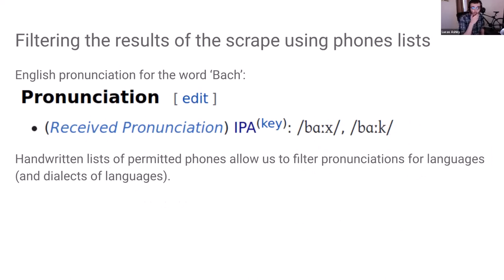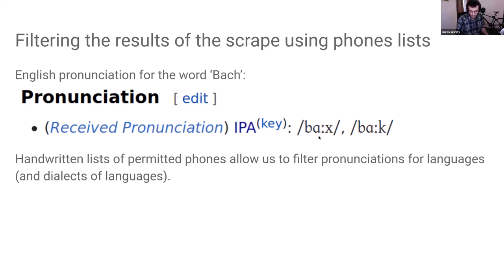The reason we became interested in filtering is because of entries like this. This is the English pronunciation listed for the word "Bach." There are two pronunciations listed — both legitimate. But what's strange is that unlike what the transcription would seem to claim, this velar fricative is not a phoneme in English. Its inclusion may dilute your model to some extent. So if you do a broad phonemic scrape of English using Wikipron, you'll end up with a lot more phonemes than you might expect.